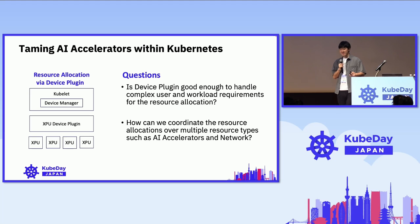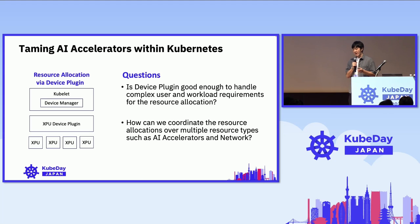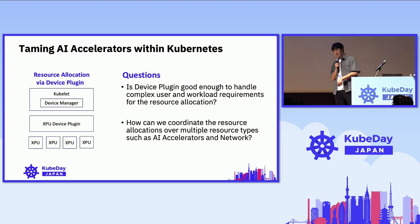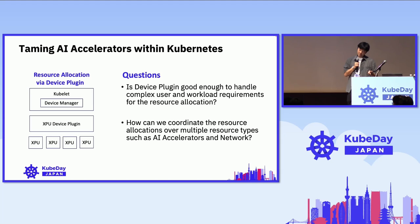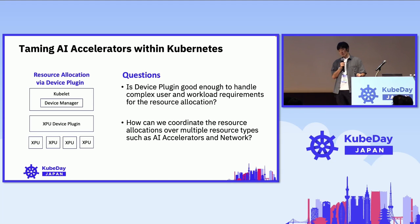Another question is: how can we coordinate if we have multiple resource allocations of multiple resource types? For example, considering AI accelerators alongside networking strategies, and so on — those are the kinds of things we have to consider.